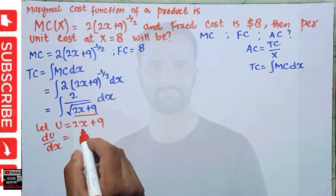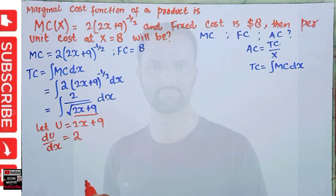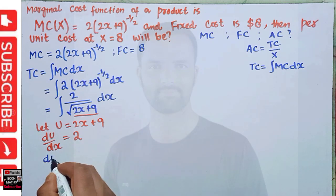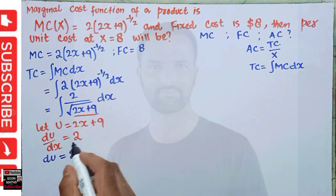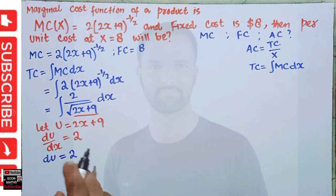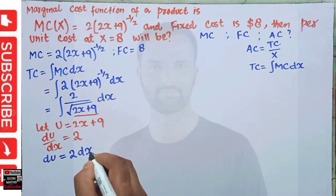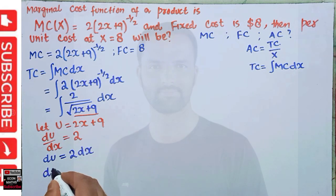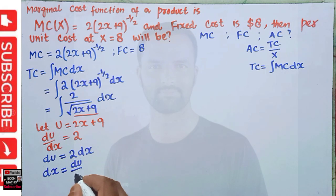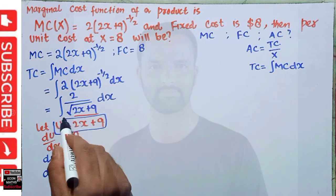Since u = 2x + 9, differentiating with respect to x gives du/dx = 2, because the derivative of 2x is 2 and the derivative of a constant is always 0. Rearranging, du = 2 dx, or equivalently dx = du/2.